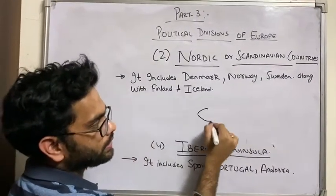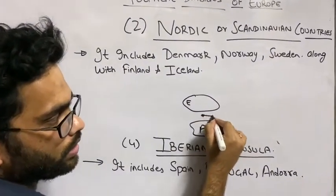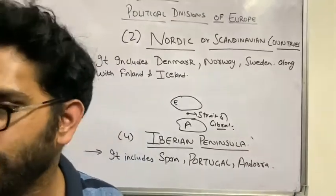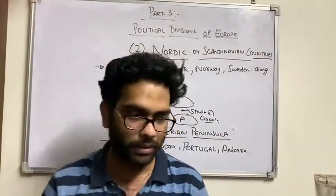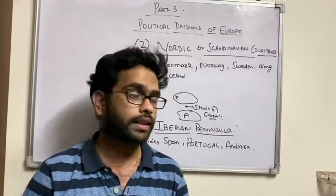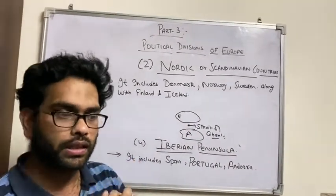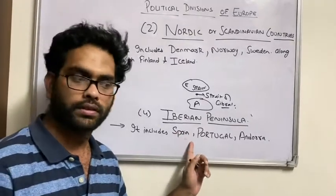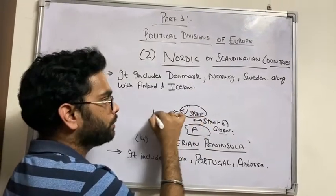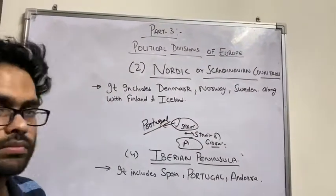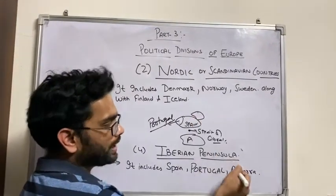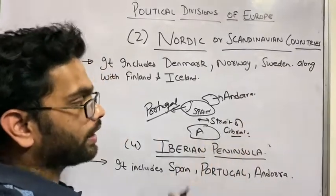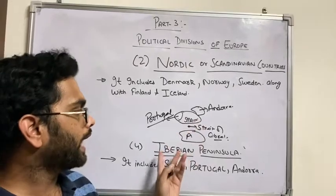This is the Iberian Peninsula. As we discussed, if this is Europe and this is Africa, then the water body between them is called the Strait of Gibraltar. So this land mass above the Strait of Gibraltar, protruding into the sea, is called the Iberian Peninsula.